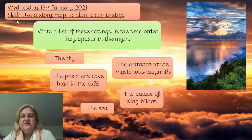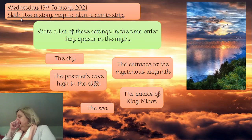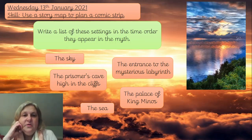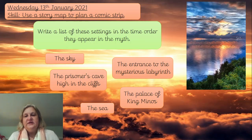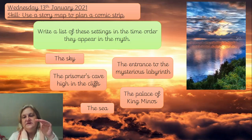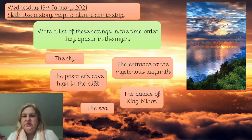Today we're using a story map to help plan a comic strip. We're going to write a list of the settings — I want you to write those down into your book as they appear. You need to order those five settings into the correct order that they happened, with the starting one at the top and the final setting at the end. Pause the video and copy those in, in the right order.